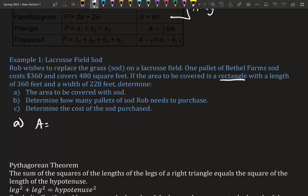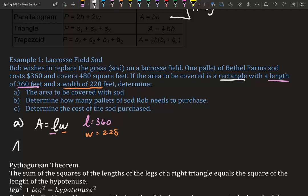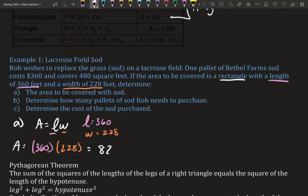Let's find our length and width. The length is 360 feet and the width is 228 feet. We just plug them in: 360 times 228. Use your calculator — that's a big thing with this chapter, use your calculator to avoid errors. We get 82,080 feet squared. It's squared because it's two dimensions.